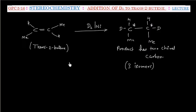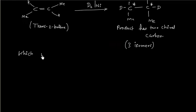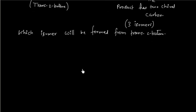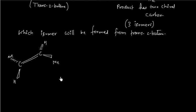Now we have to find which isomer will be formed from trans-2-butene, drawn in perspective. Addition of hydrogen or addition of deuterium is cis-addition or syn-addition — that is, both deuteriums are added either from the top face or from the bottom face. So addition of D2 is syn-addition.